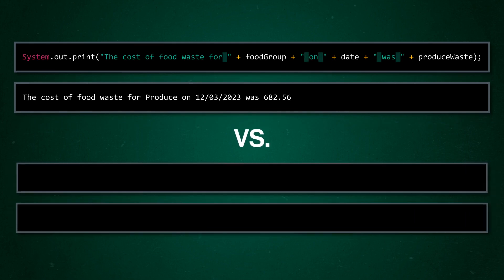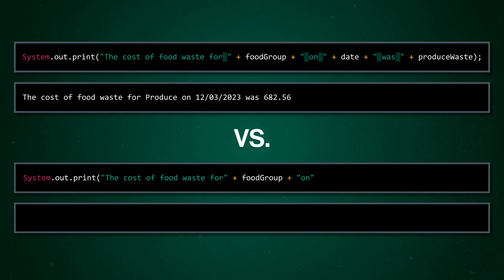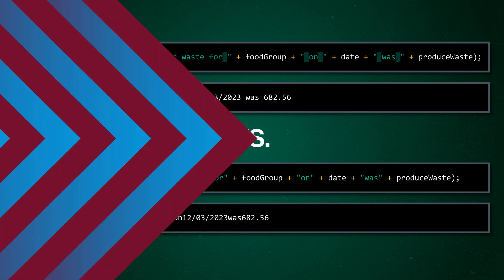Just a side note: the literal data may need spaces at the beginning or end to make sure that there's a space before and after the variable when the message prints, otherwise your sentence would run together without any spaces. Now, Andrea's program lets her input a date and product type into fields in a window, and outputs how much waste was produced that day. But she really wants to look at multiple product types at once, so she can compare and contrast where the biggest problems lie, and this requires a more complicated print statement.